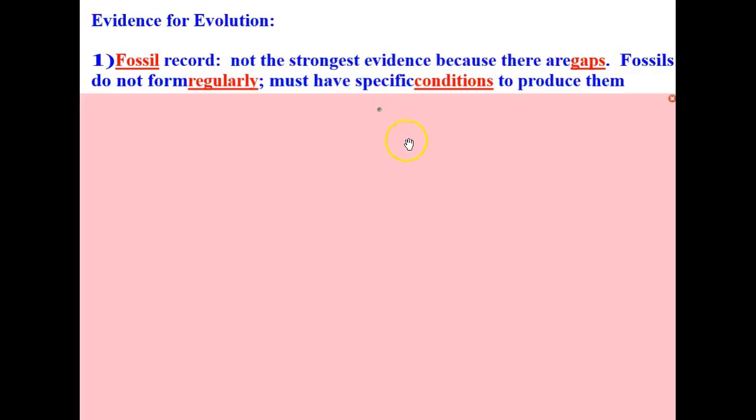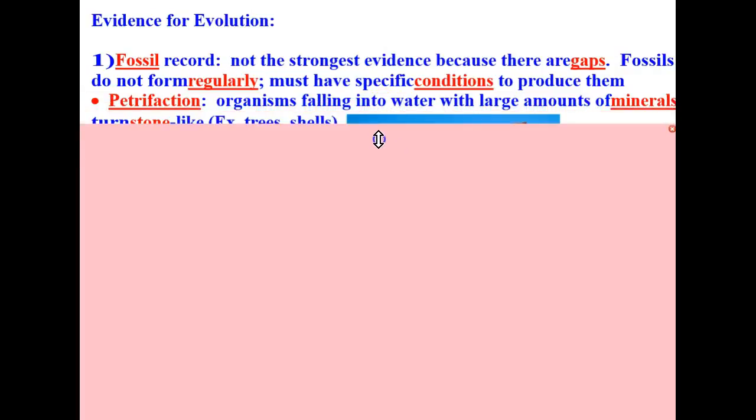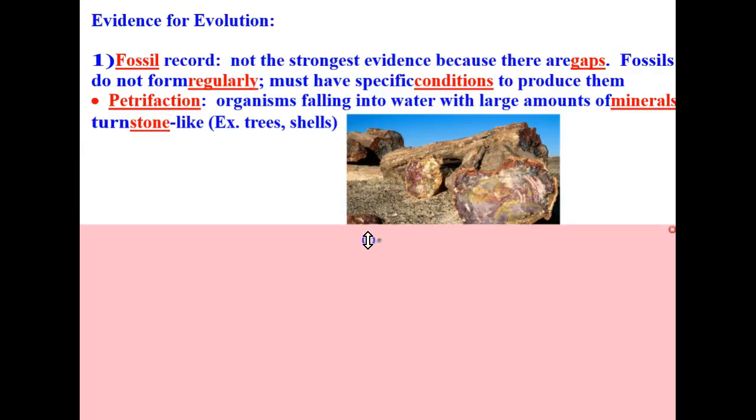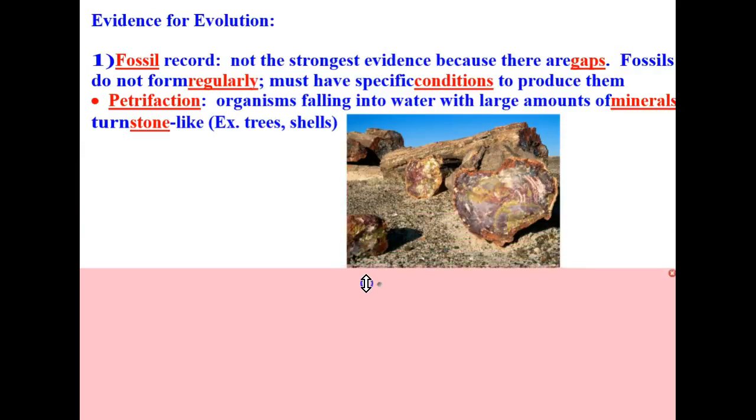There are many types of fossils. The first is petrifaction. Petrifaction are organisms falling into water with large amounts of minerals which turn stone-like. For example, petrified trees, shells, etc.